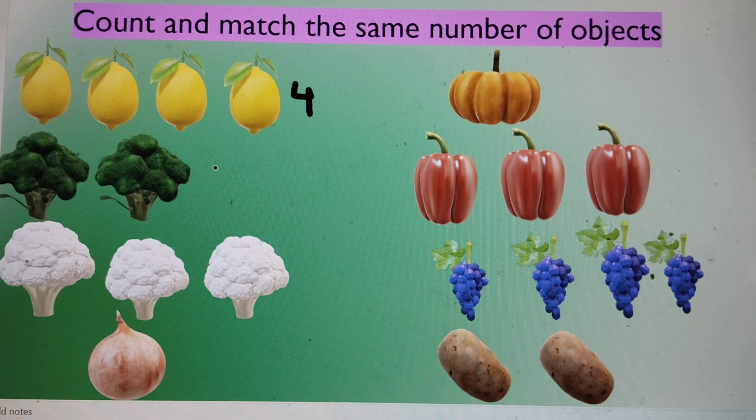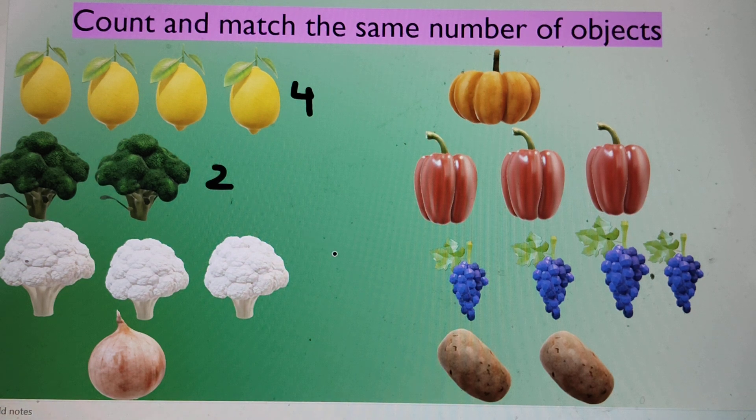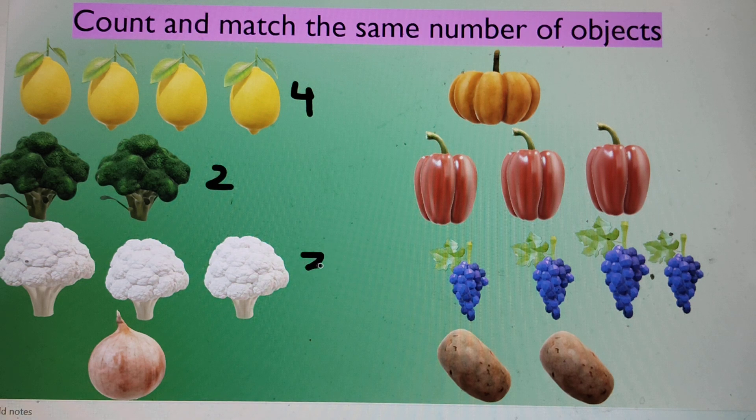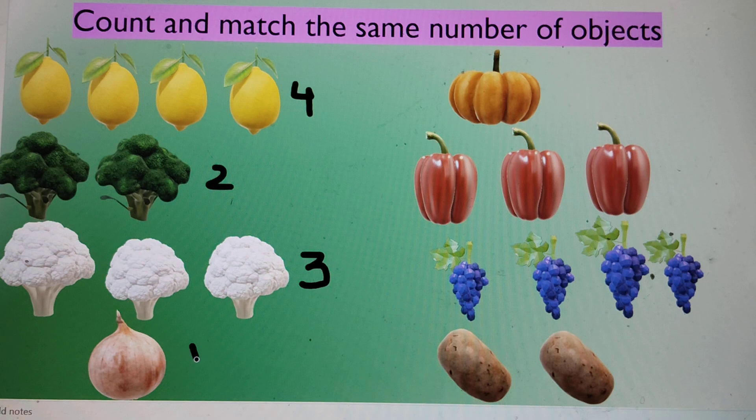How many broccolis are there? Two. How many cauliflowers are there? Three. And how many onions are there? One.